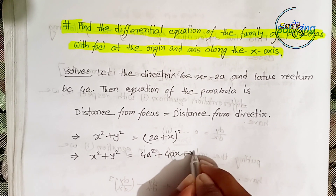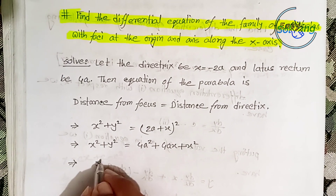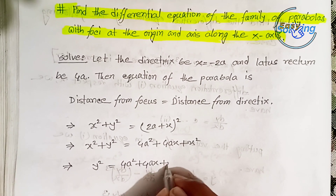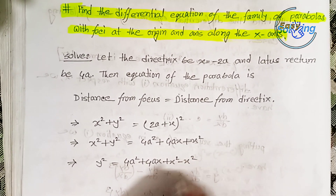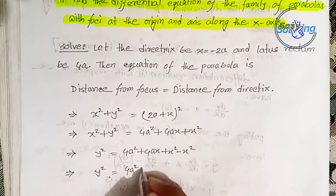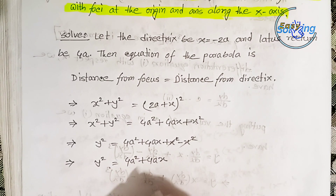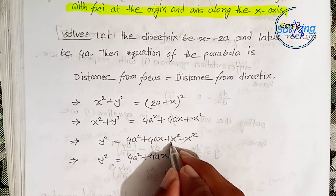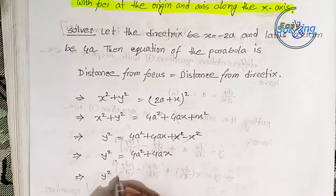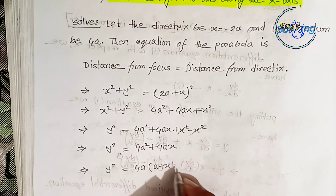Here is the parabola equation. The equation of the parabola uses the definition: distance from focus equals distance from directrix. So x² + y² = (2a + x)², which expands to x² + y² = 4a² + 4ax + x².